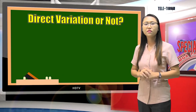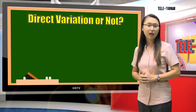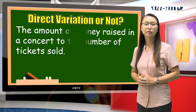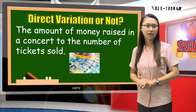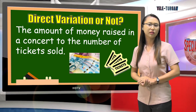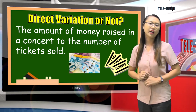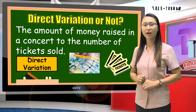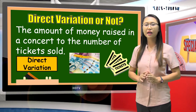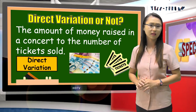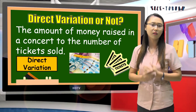Let us have the following statements and see if the given statement shows direct variation or not. The amount of money raised in a concert versus the number of tickets sold — is this direct variation or not? This statement shows direct variation, because the more tickets sold, more money will be raised in a concert. Or the less tickets sold, less money will be raised in a concert.